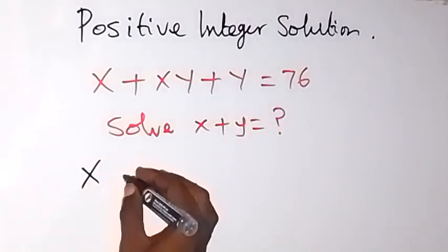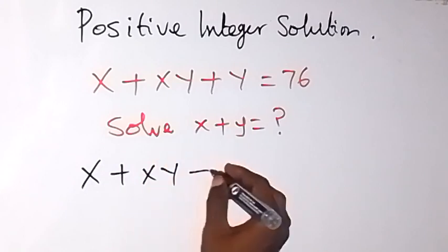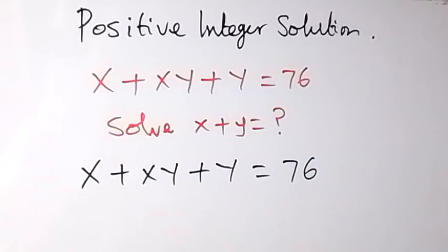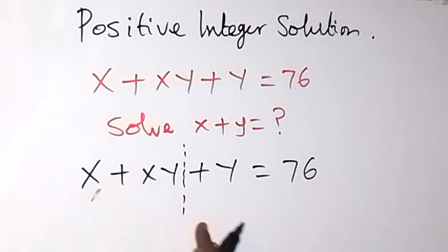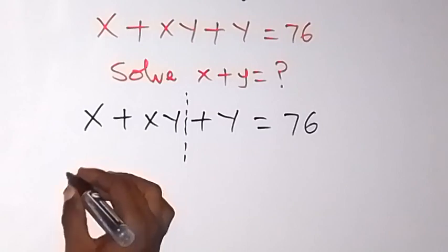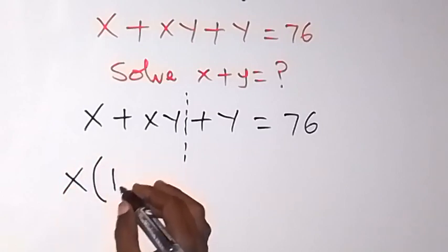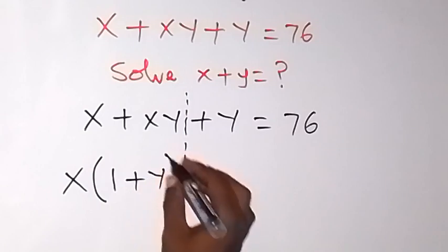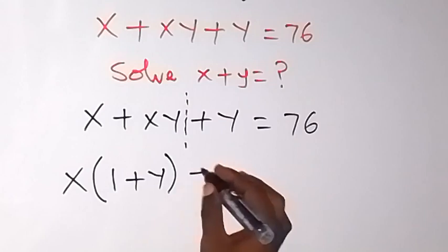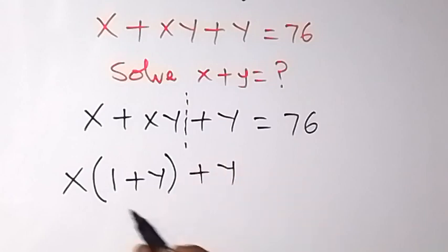We have x plus xy plus y equals 76. The approach we are using here is to separate common factors. We can see that x is common between the first two terms, so we bring it out: x times (1 plus y), then plus y.